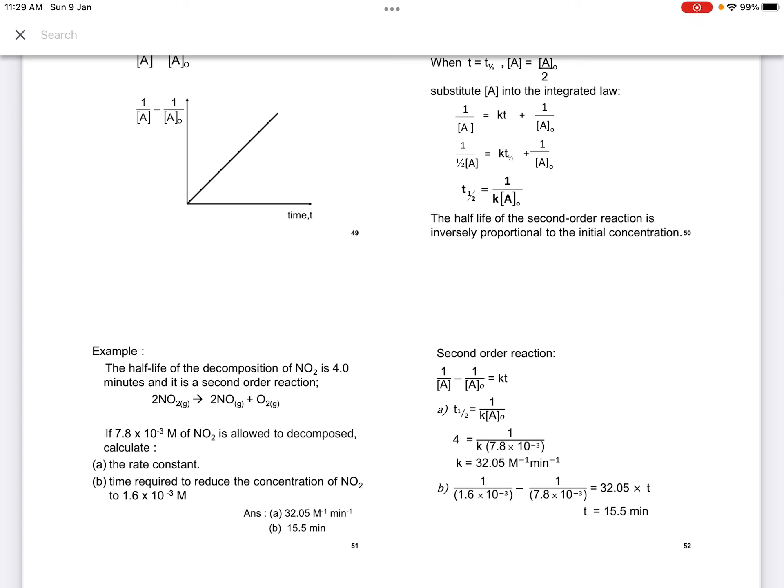Example: the half-life of decomposition of NO2 is 4 minutes, and it's a second-order reaction. If 7.8 times 10 to the power minus 3 molar of NO2 is allowed to decompose, calculate the rate constant and time required to reduce the concentration to 1.6 times 10 to the power minus 3 molar. So since they say second-order reaction, the integrated rate formula will be 1 over A minus 1 over A0 equals to KT.